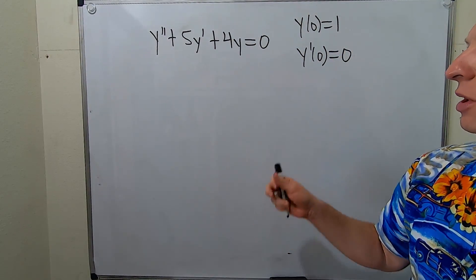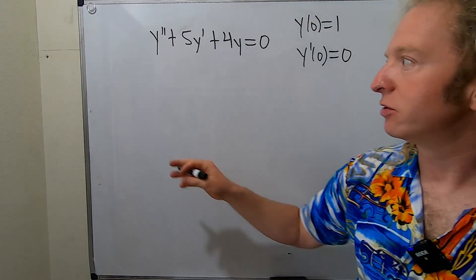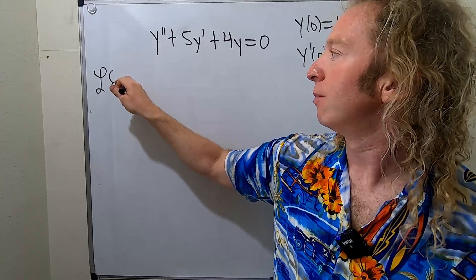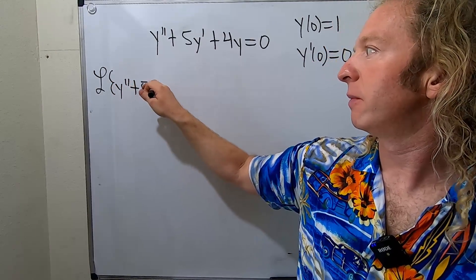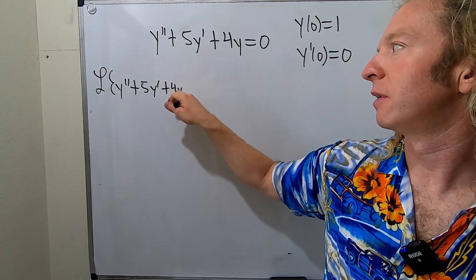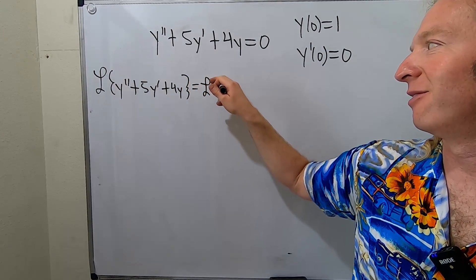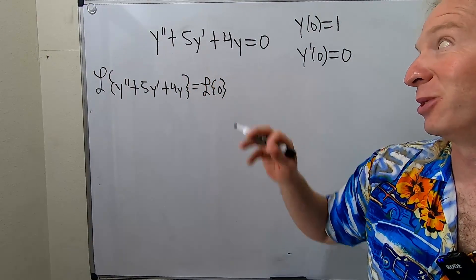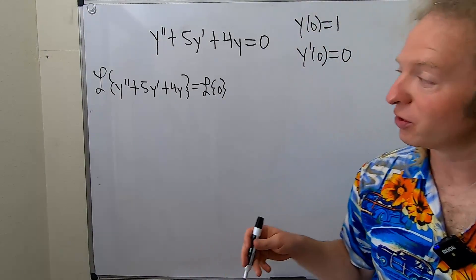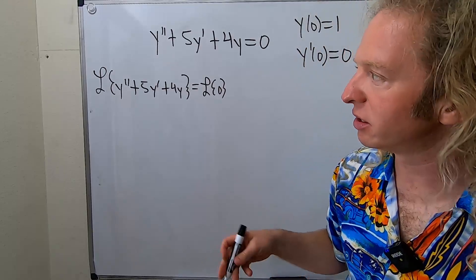The very first step you need to do is take the Laplace transform of both sides. So we'll start by taking the Laplace of y double prime plus 5y prime plus 4y, and that's equal to the Laplace of 0. The Laplace transform is linear, so what you can do now is take the Laplace of each individual piece.